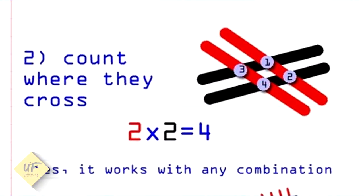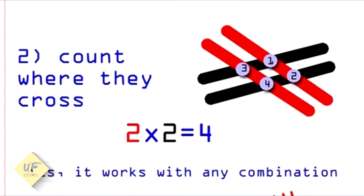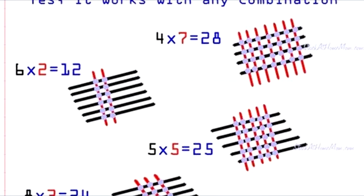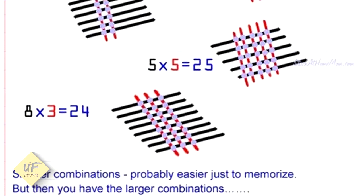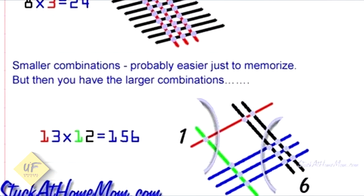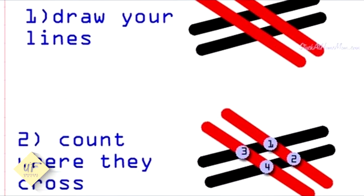Now you count where those lines crossed: 1, 2, 3, 4. 2 times 2 is 4. And it works with any combination. Give it a try: 4 times 7 is 28, 6 times 2 is 12, 5 times 5 is 25, and 8 times 3 is 24.